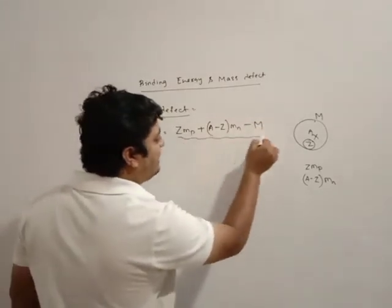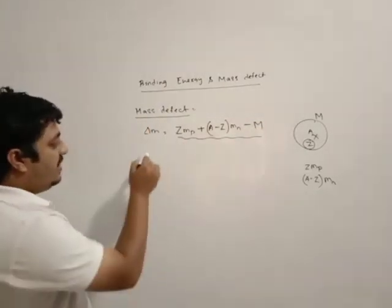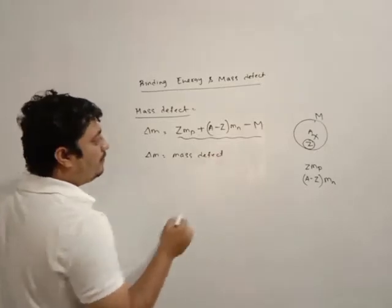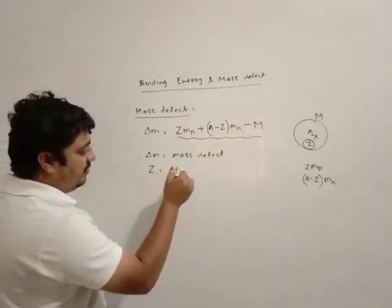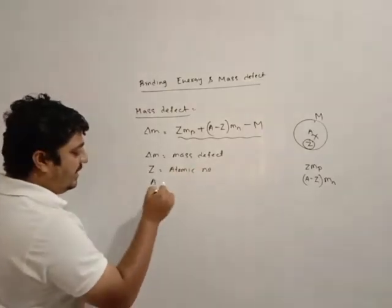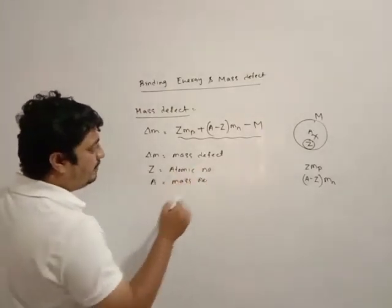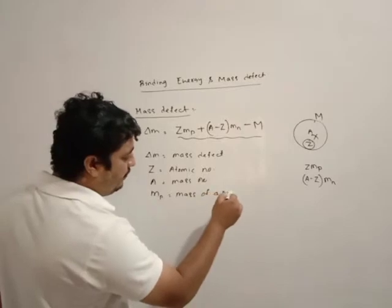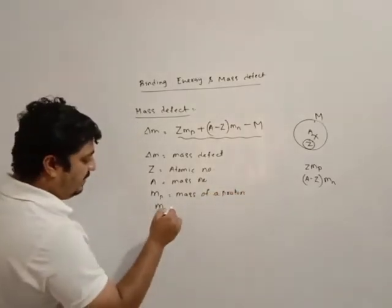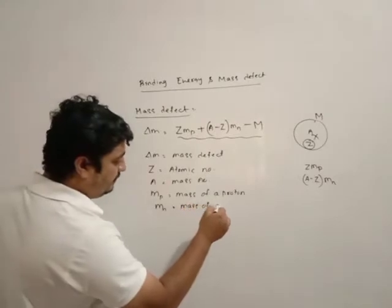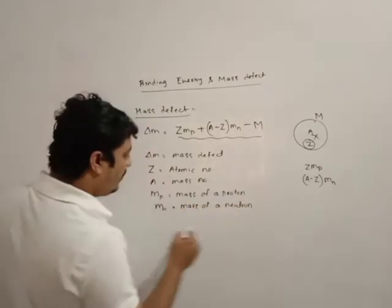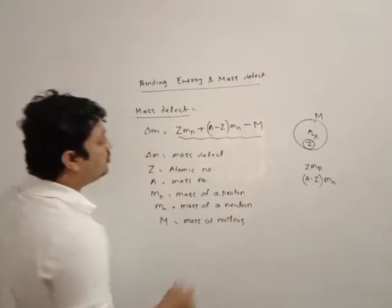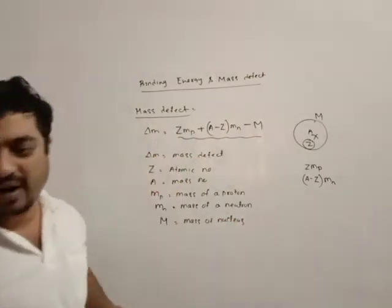Then, this difference in mass is called mass defect, where delta M is the mass defect. Here, Z is atomic number, A is mass number, Mp is mass of a proton, Mn is mass of a neutron, and capital M is mass of nucleus. So this difference in mass is called mass defect.